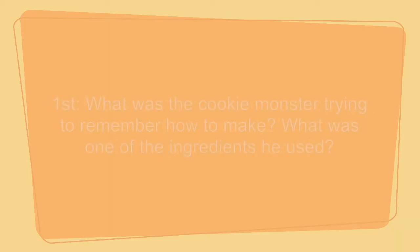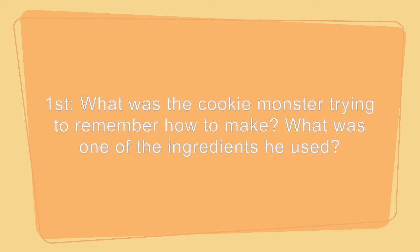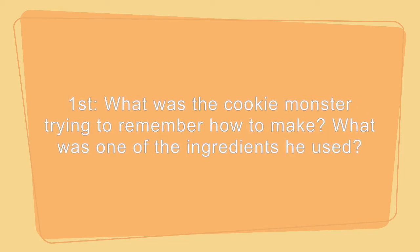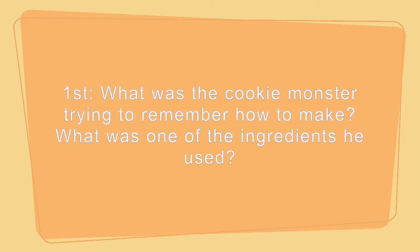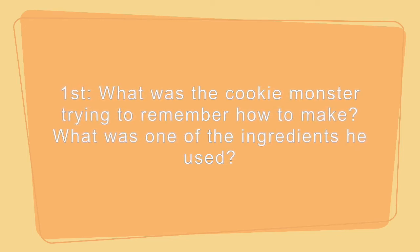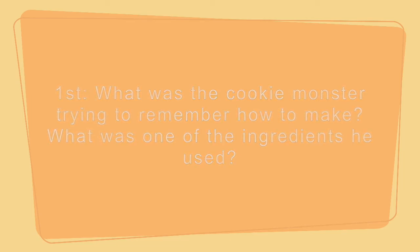Now first grade, we are going to go a step further. You're also going to be telling me what the Cookie Monster was trying to remember how to make, but I'm not going to give you a prompt. Here is your slide. Your questions are: What was the Cookie Monster trying to remember how to make? Write one sentence telling me that. And then write another sentence telling me what was one of the ingredients he used.